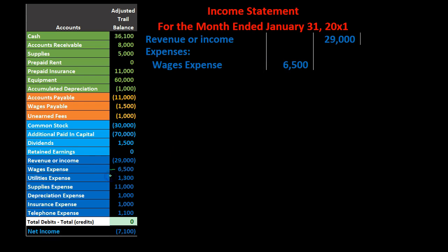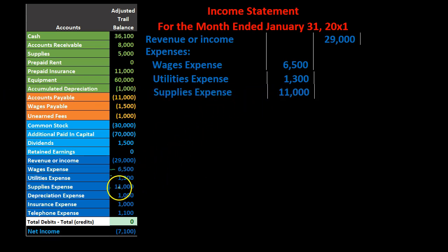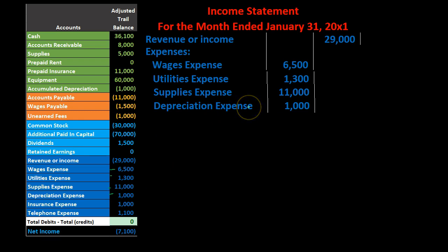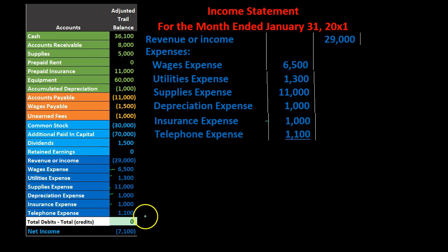Then we've got utilities expense, supplies expense, depreciation expense, insurance expense, and telephone expense — all listed in the inner column as subcategory items under expenses.